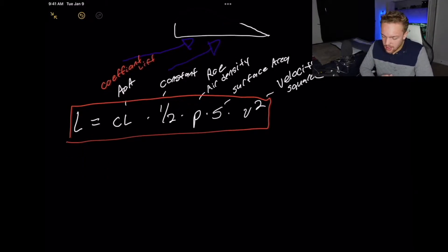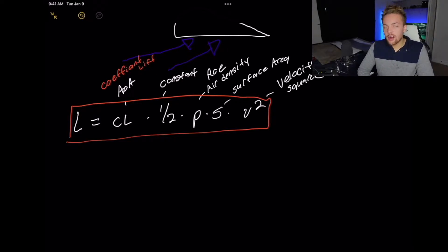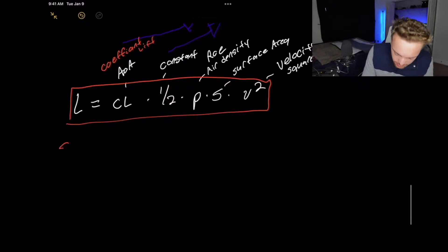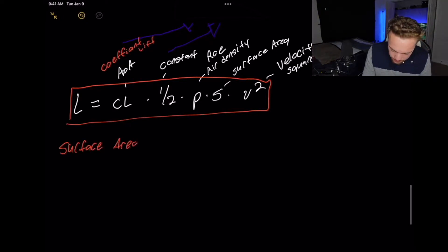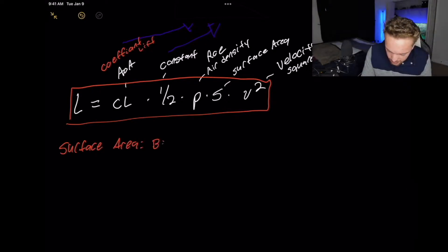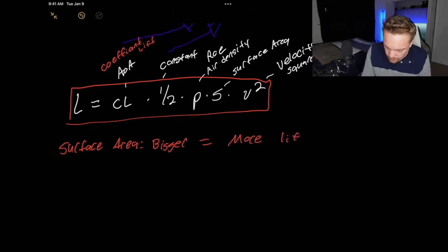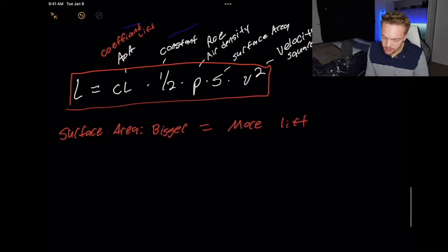Let's start with the easiest one: surface area. What does this mean? The size of the airfoil is going to produce more lift. The larger the airfoil you have, the more lift you're going to produce. Bigger equals more lift. And that's all you need to know about surface area — pretty easy.